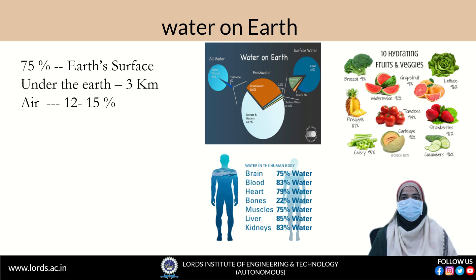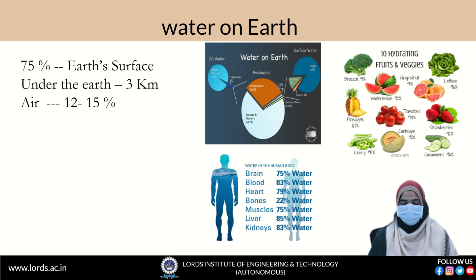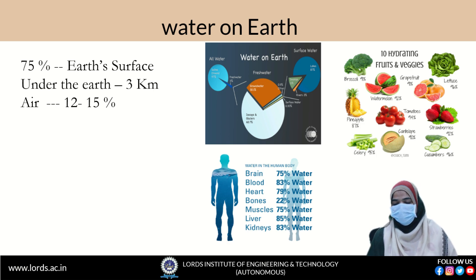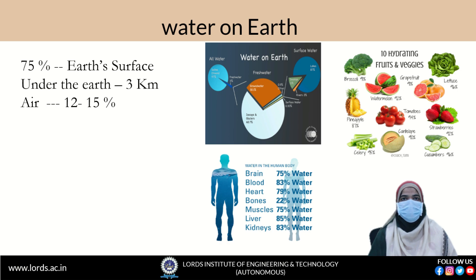If we take the example of our human body, 75% of water is present in the brain. Blood also consists of 83% of water. Heart also contains 79% of water. Plants, vegetables, and fruits may also contain 90–95% of water.